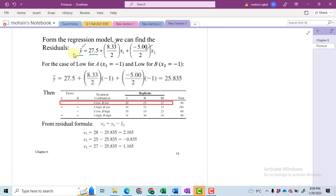We have basically four different treatments: A low B low, A high B low, A low B high, and A high B high.